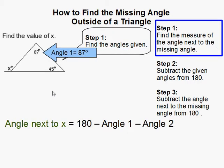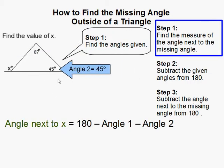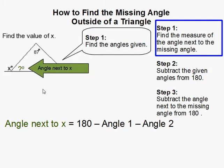The first thing we do is find the angles that are given. This is 87 degrees, it's 45 degrees here. We want to find this angle next to the missing angle on the inside.